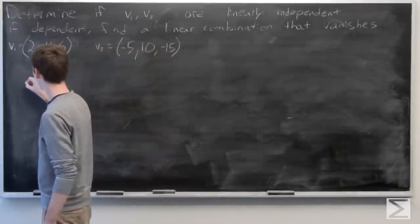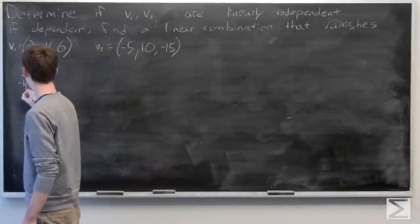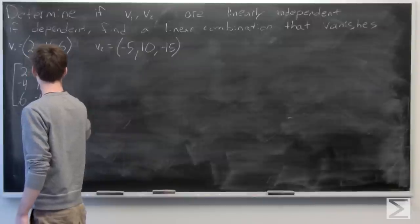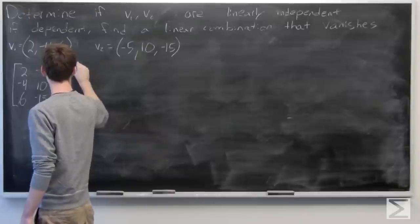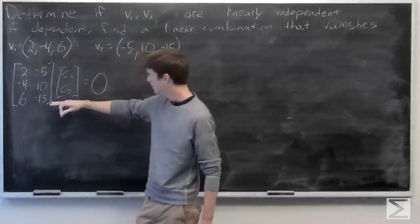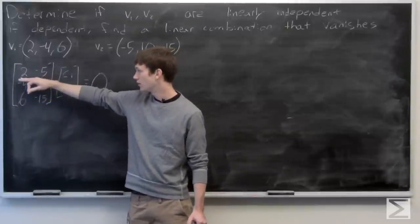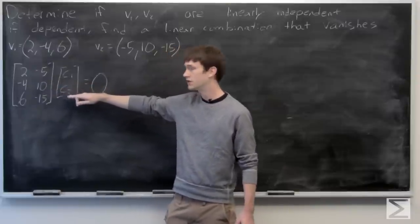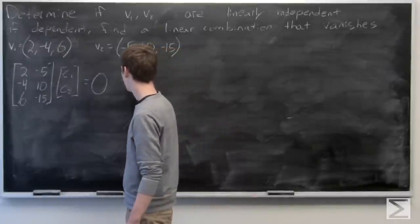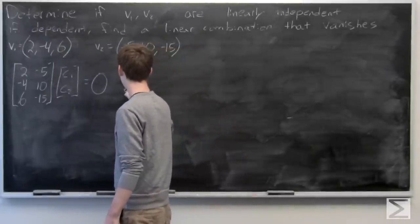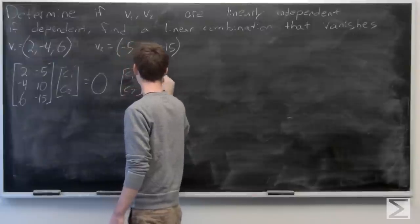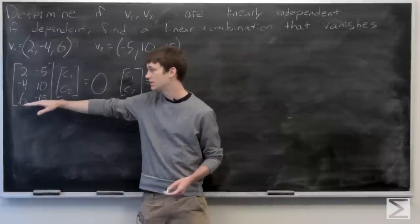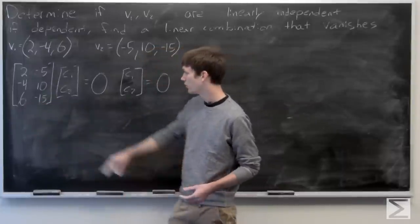We have a theorem that tells us that if the only solution to the system where our matrix columns are our vectors, such that c1*v1 + c2*v2 = 0, is when c1 = c2 = 0, then our vectors are linearly independent. So we want to solve this system.